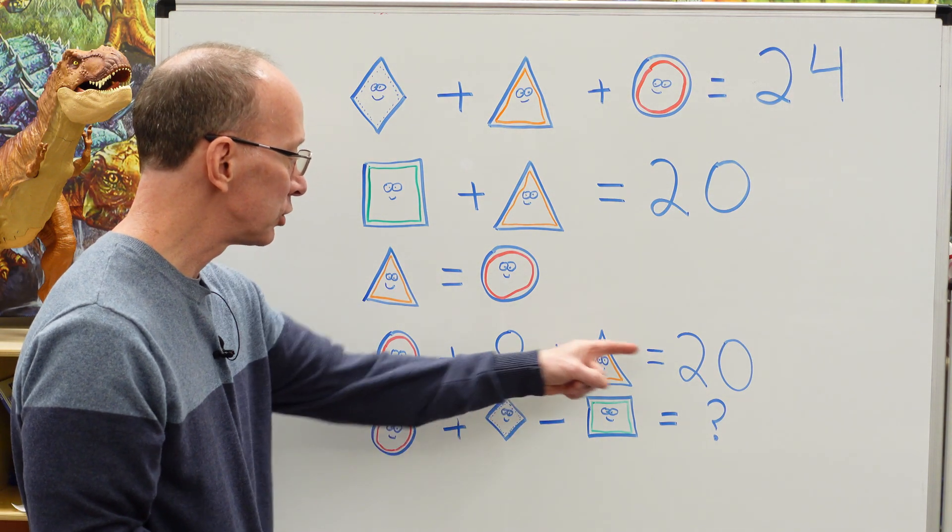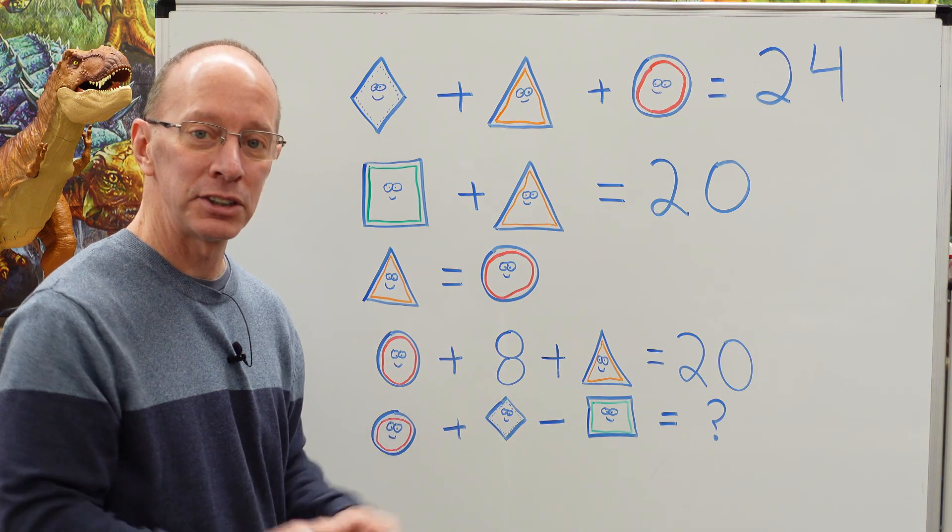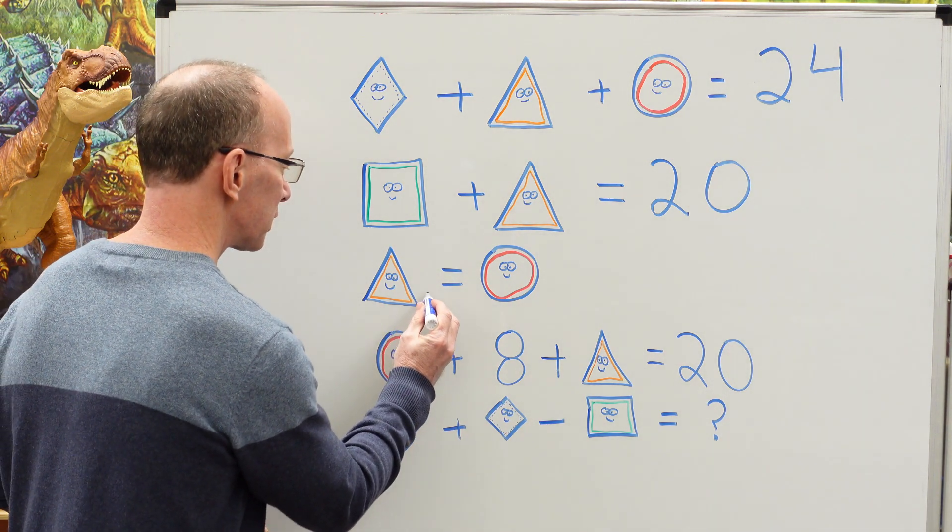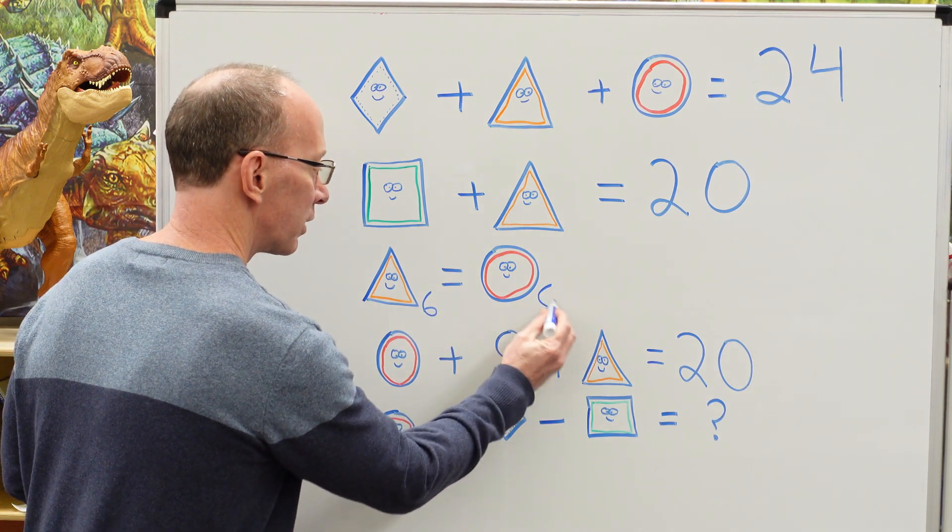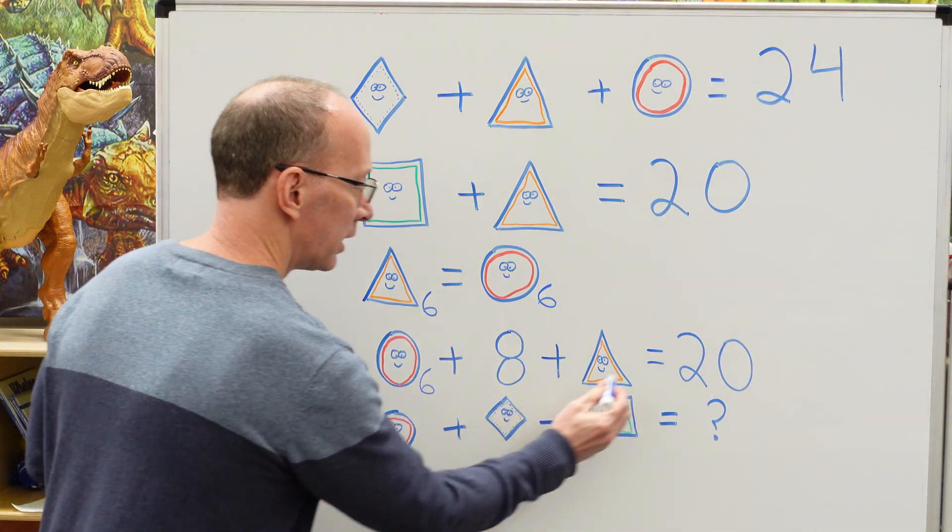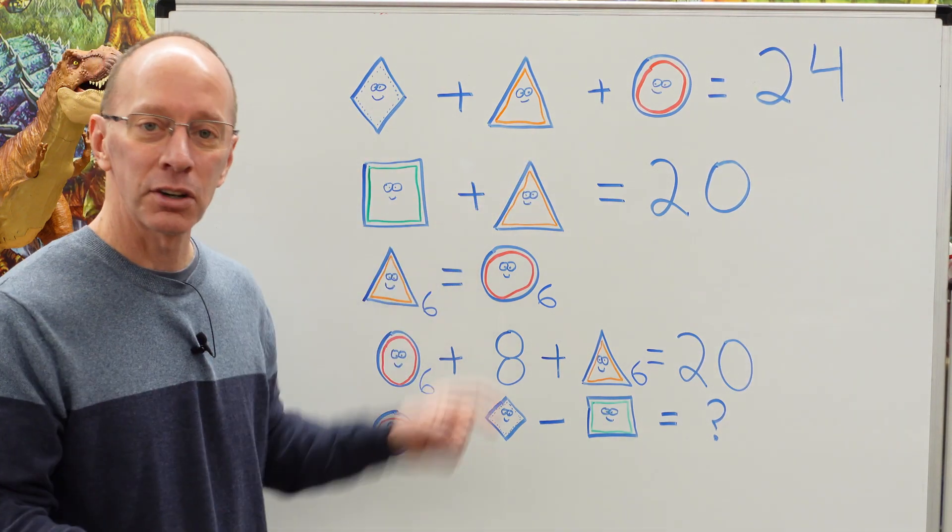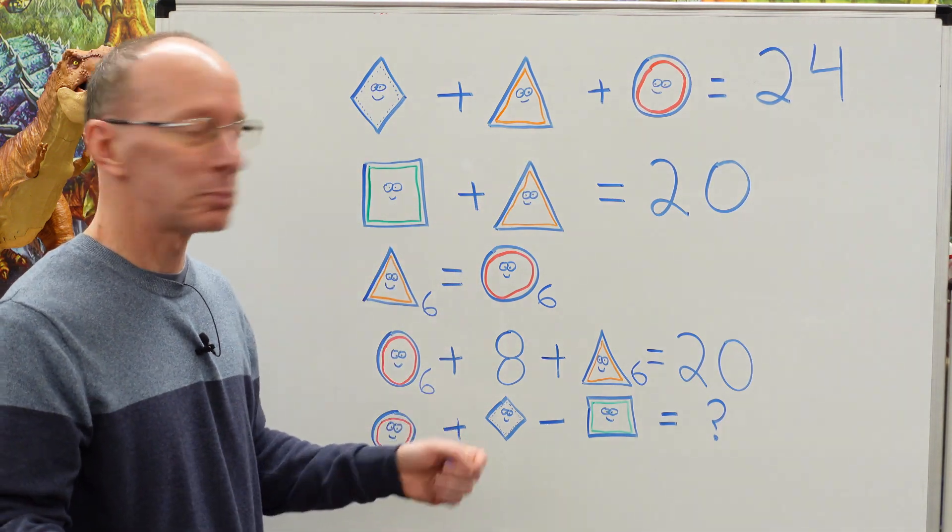So I have 12 here. So 12 divided by two would be six. So I'm just going to go ahead and put a six right here. Six right here, a six right here, and a six right here. And I'm going to look around here to see if there's any other circles or triangles. And then I'm just going to put sixes.